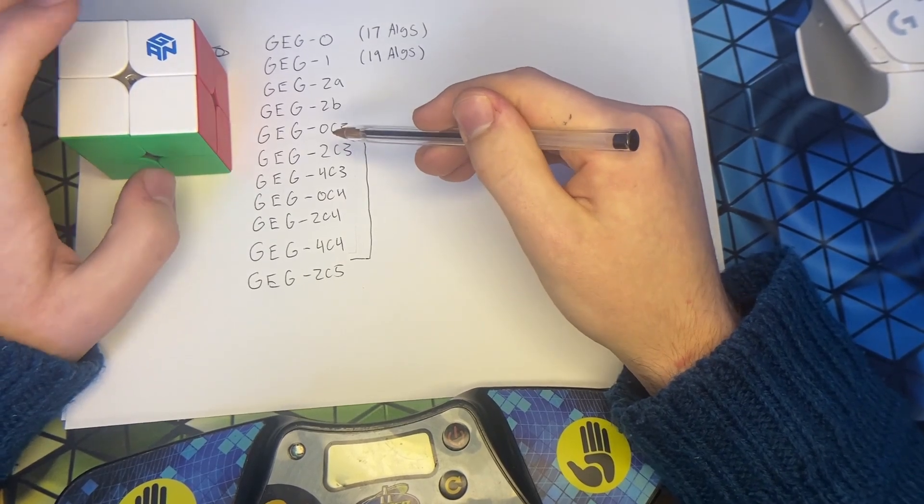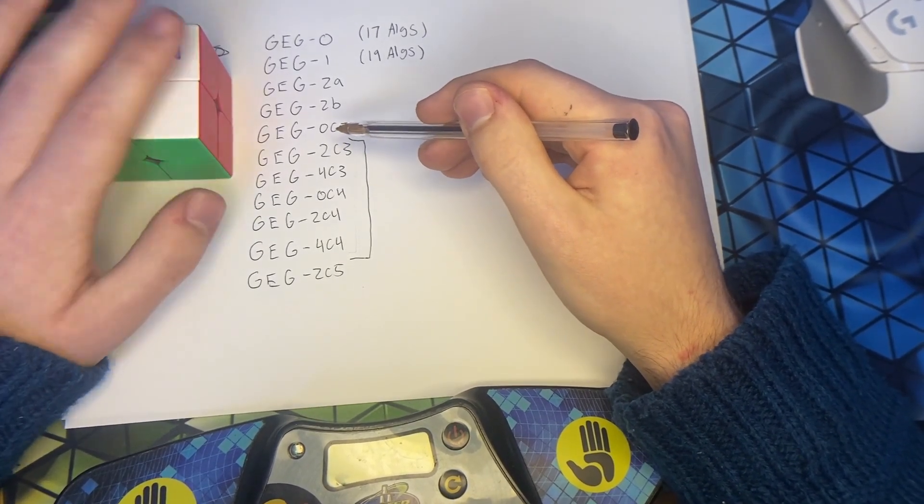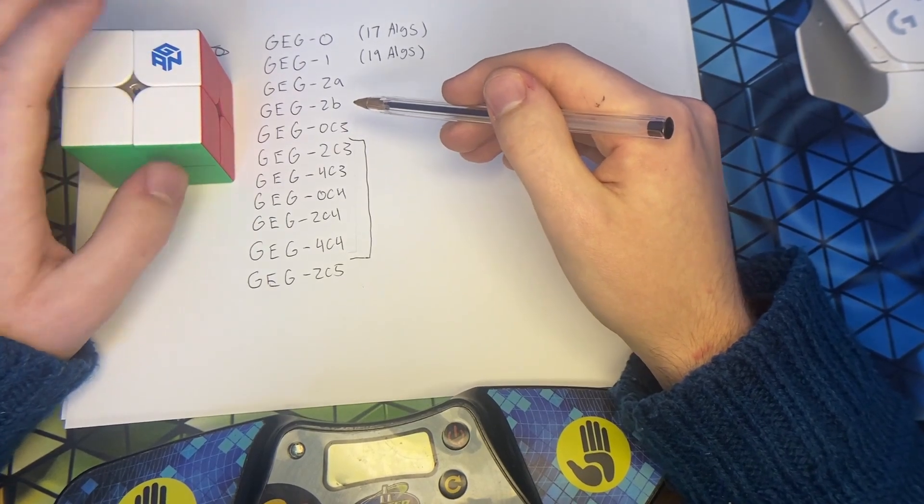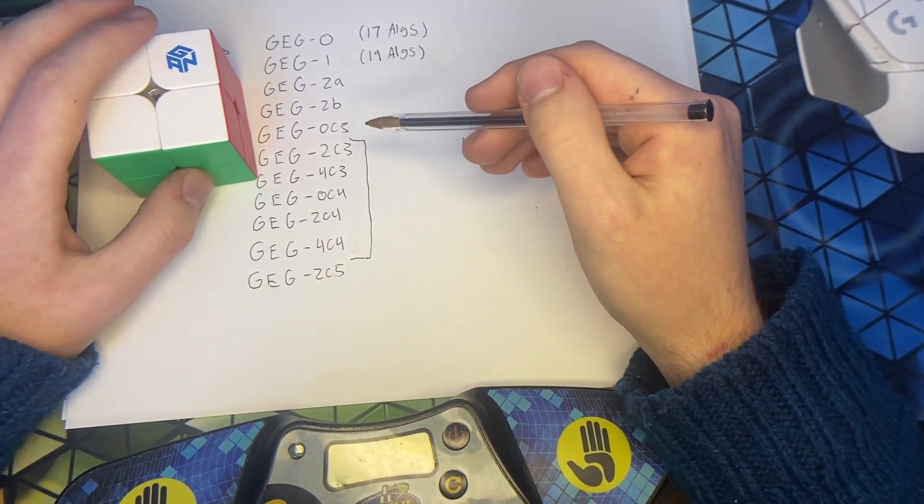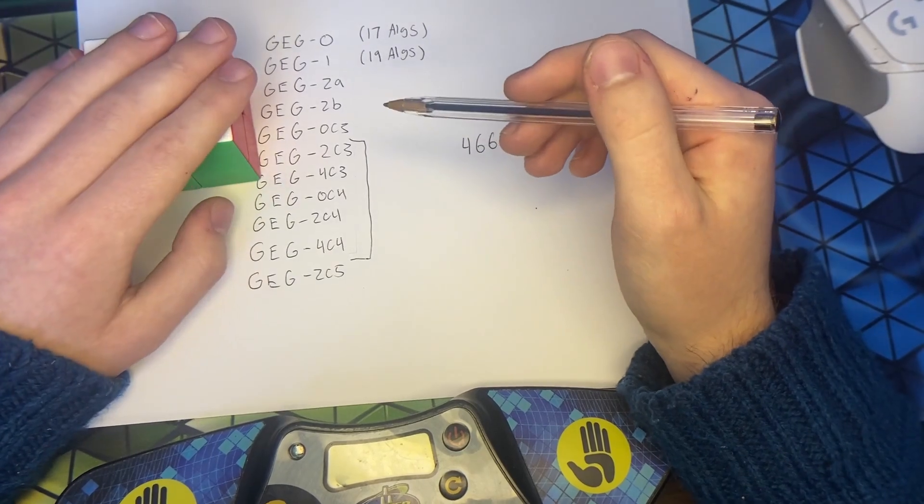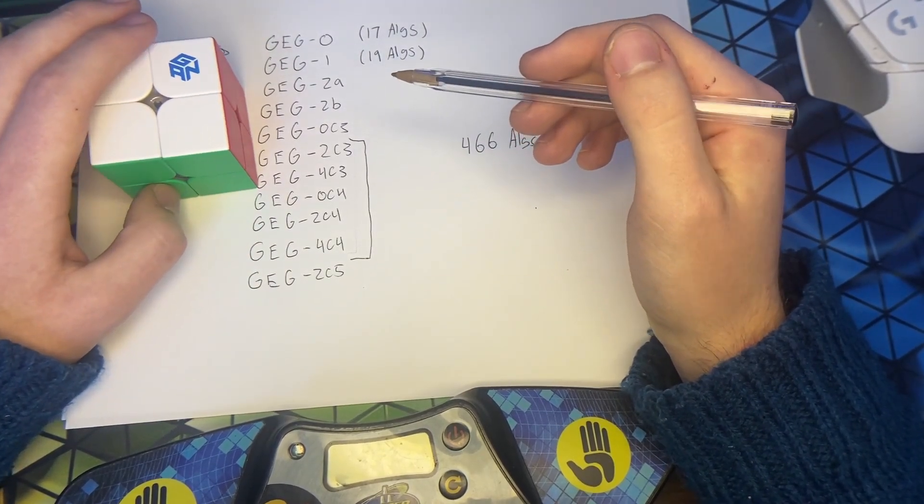Because if you know where the bad corners are, that doesn't tell you everything about what case it is. You have to trace additional parities on top of it. Which I think can be done in 15 seconds. But it's going to take a lot of practice.